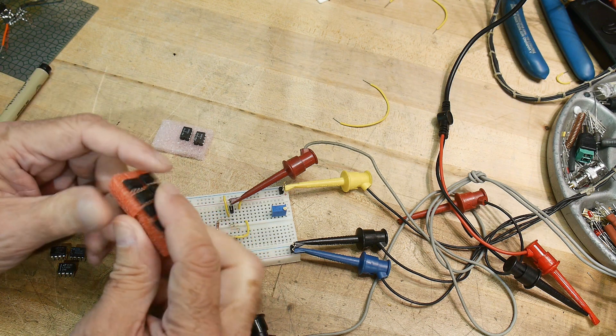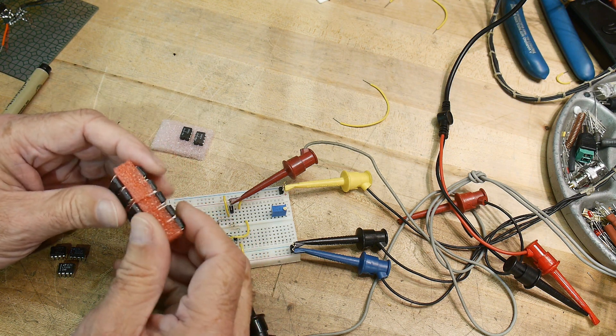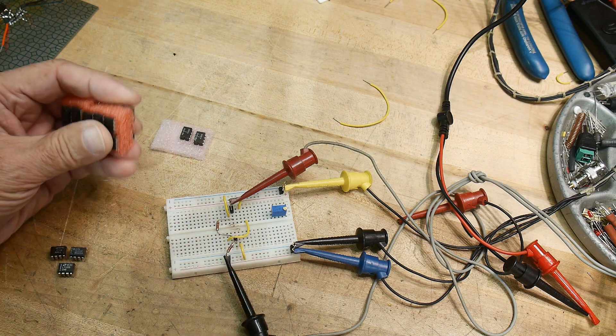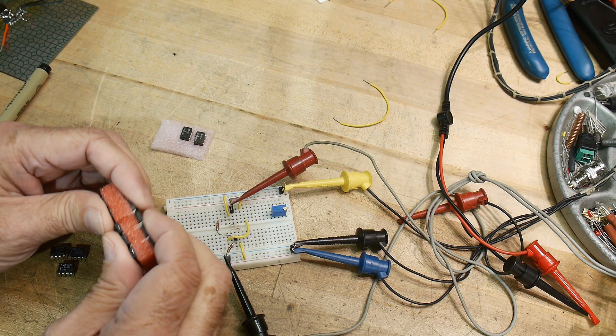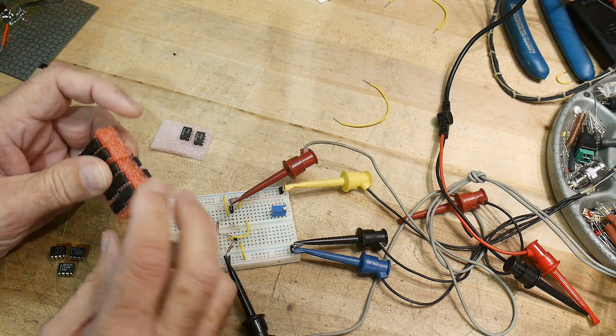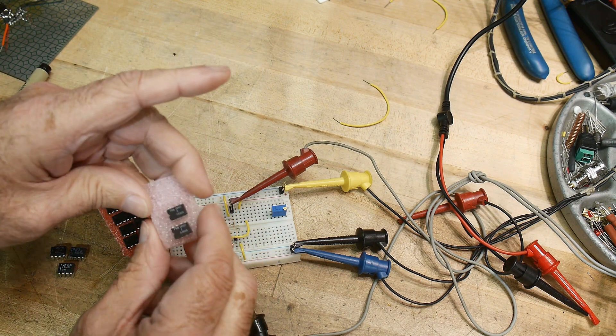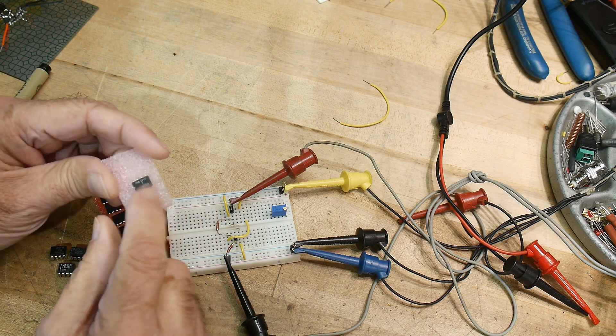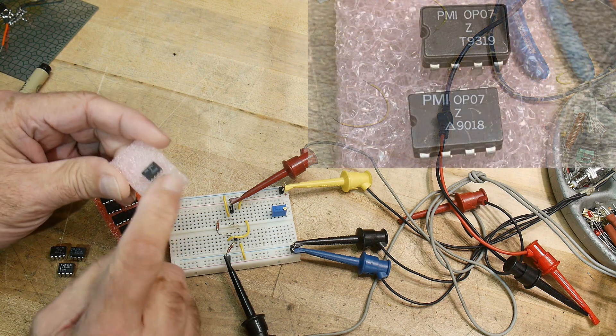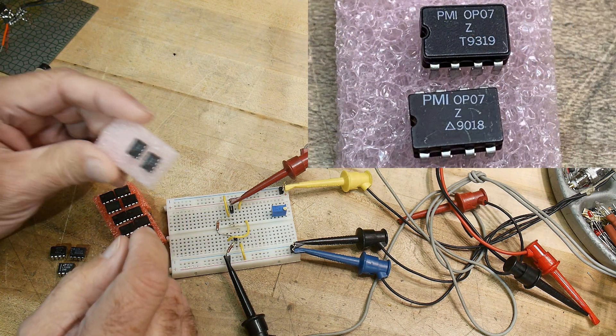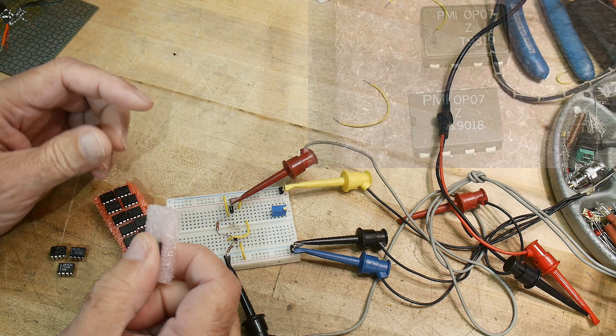So why did I know they were bad? Well I measured something called offset voltage. So let's go ahead and go through that again. I've gone ahead and ordered and received some official OP07s, so we can compare them against good ones and see what I was talking about.